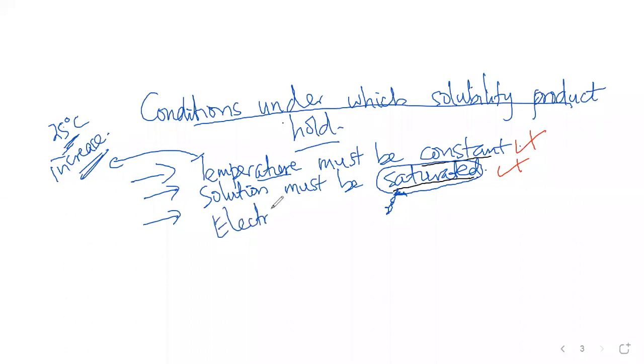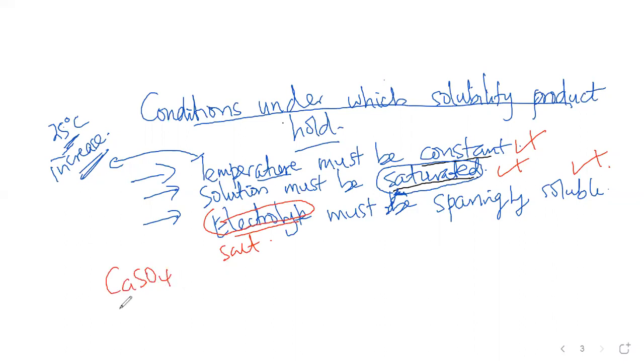Then the electrolyte must be sparingly soluble. Now you may wonder why I'm using the term electrolyte and sometimes I use the word salt. Actually, I would prefer the word electrolyte whenever I'm talking about solubility product. Why? Calcium sulfate is sparingly soluble and is an electrolyte. Lead sulfate is sparingly soluble and is an electrolyte. Silver chloride, silver sulfate, all of these ones are sparingly soluble and are electrolytes because they are ionic compounds. And apart from being electrolyte, they are also salts.